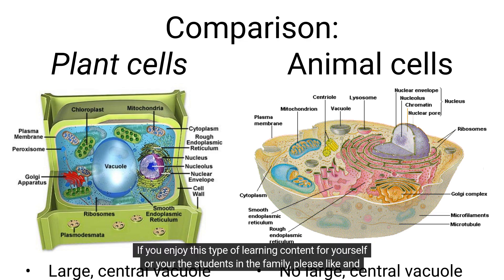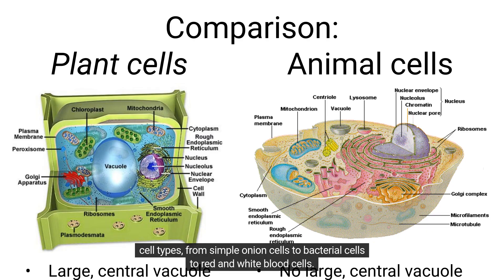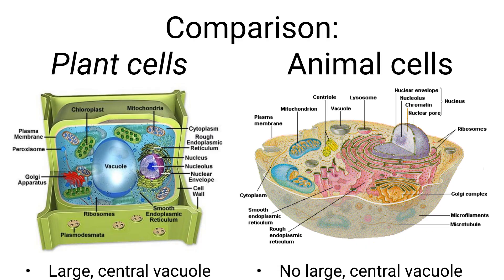If you enjoy this type of learning content for yourself or the students in the family, please like and share. For the next lesson in this series, we will look at an actual microscopic view of these different cell types — from simple onion cells to bacterial cells to red and white blood cells. Thank you.